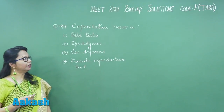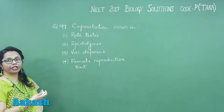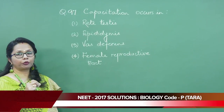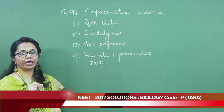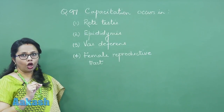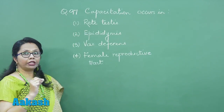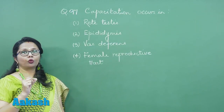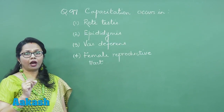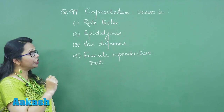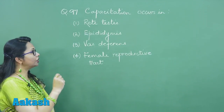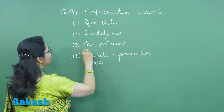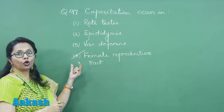Question number 97 — a very direct question. Capacitation occurs in — so capacitation is a process where the sperm gains fertilizing ability. Kuch changes aate hain sperm mein, or us mein nearly seven hours lagte hain, and this capacitation occurs in the female's reproductive tract.